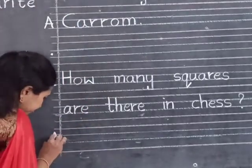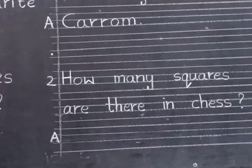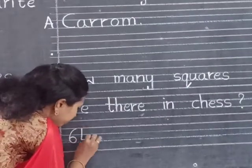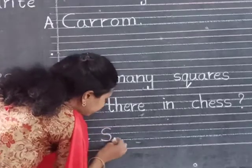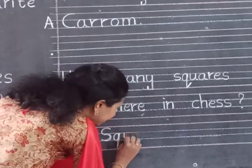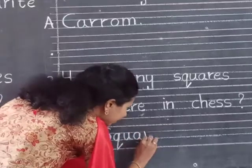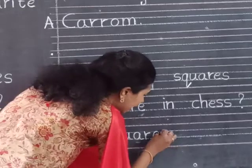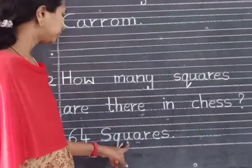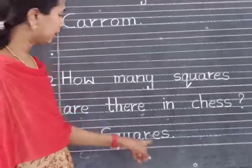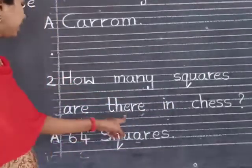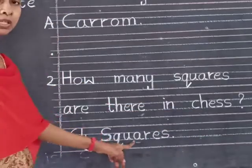Now I am writing the answer. What is the answer? How many squares? The number is 64. How many squares? 64 squares. Now I am writing 64. S-Q-U-A-R-E-S, squares. Answer: 64 squares. How many squares are there in chess? 64 squares.